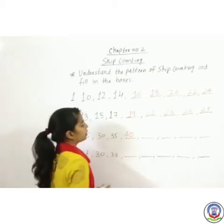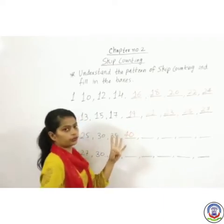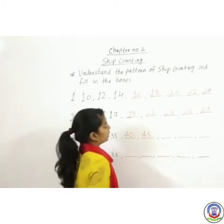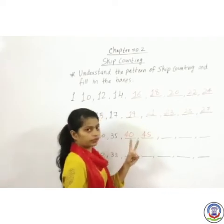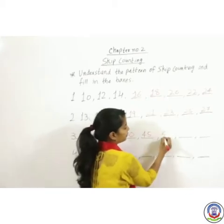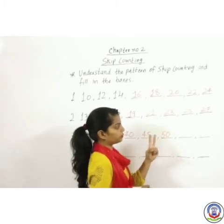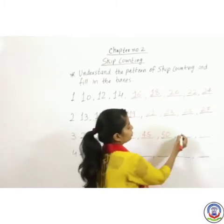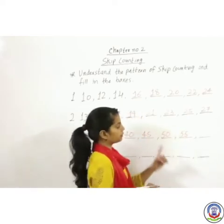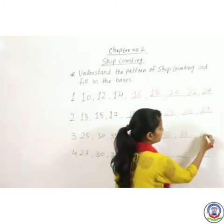We are skip counting by 5s. We write 40, then skip 5 numbers to get 45, then skip 5 more to get 50, then skip 5 more to get 55, and skip 5 more to get 60.